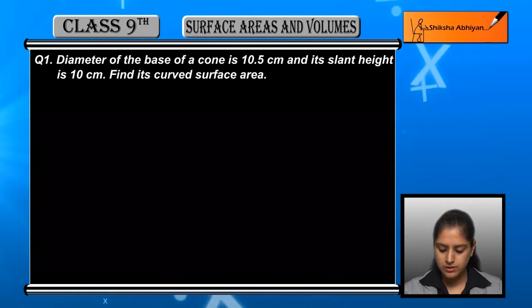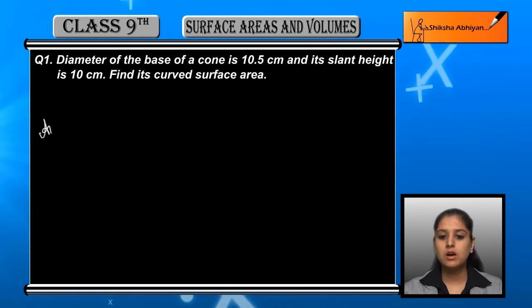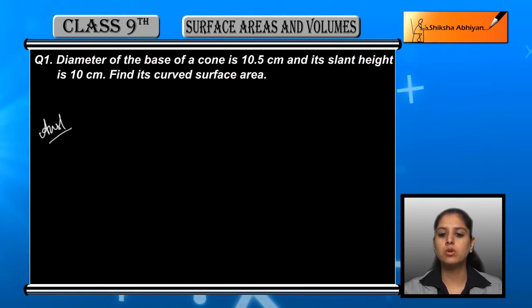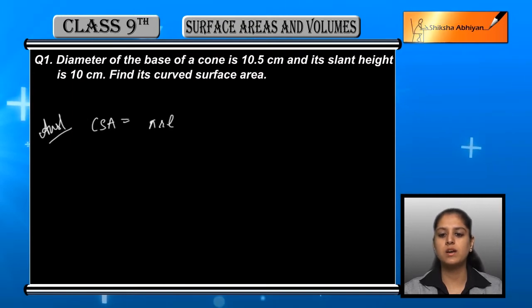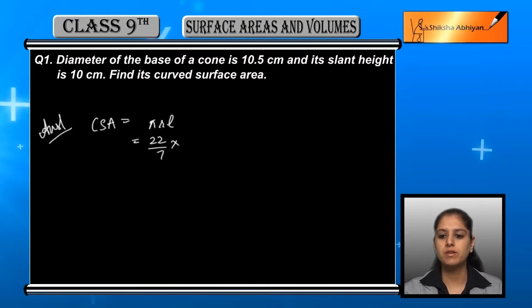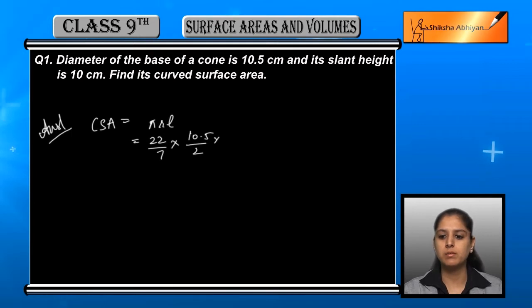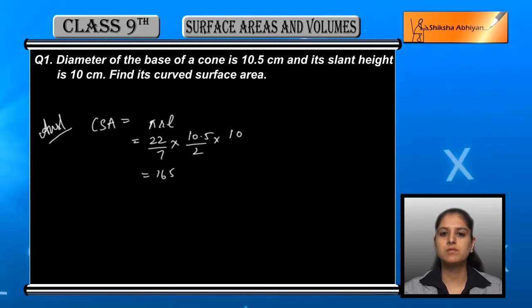The curved surface area of a cone is equal to π r l, that is 22/7 into r. The radius is 10.5 upon 2 (since diameter is given), multiplied by 10. That gives 165 centimeters square.